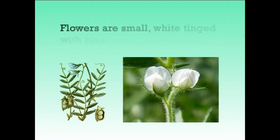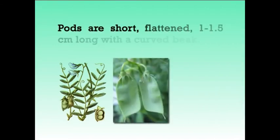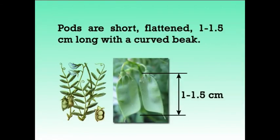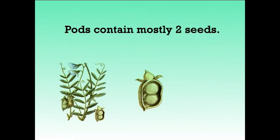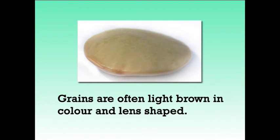Flowers are small, white tinged with blue, violet or pink. Pods are short, flattened, 1 to 1.5 cm long with a curved beak. Pods contain mostly two seeds. Grains are often light brown in color and lens shaped. It is generally a self-pollinated crop, and in India it is mostly consumed as dal.